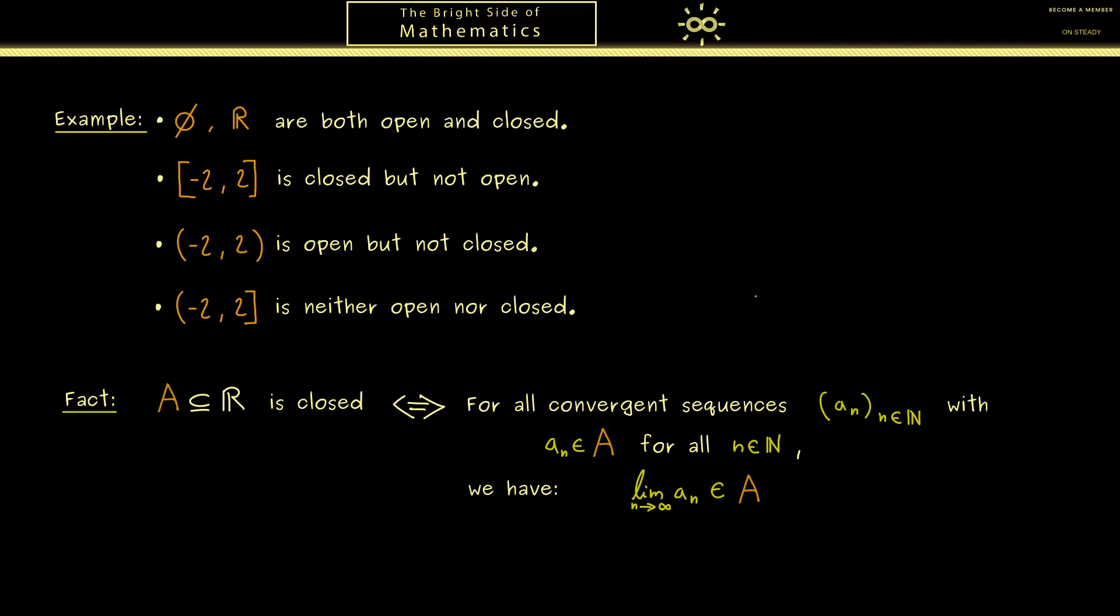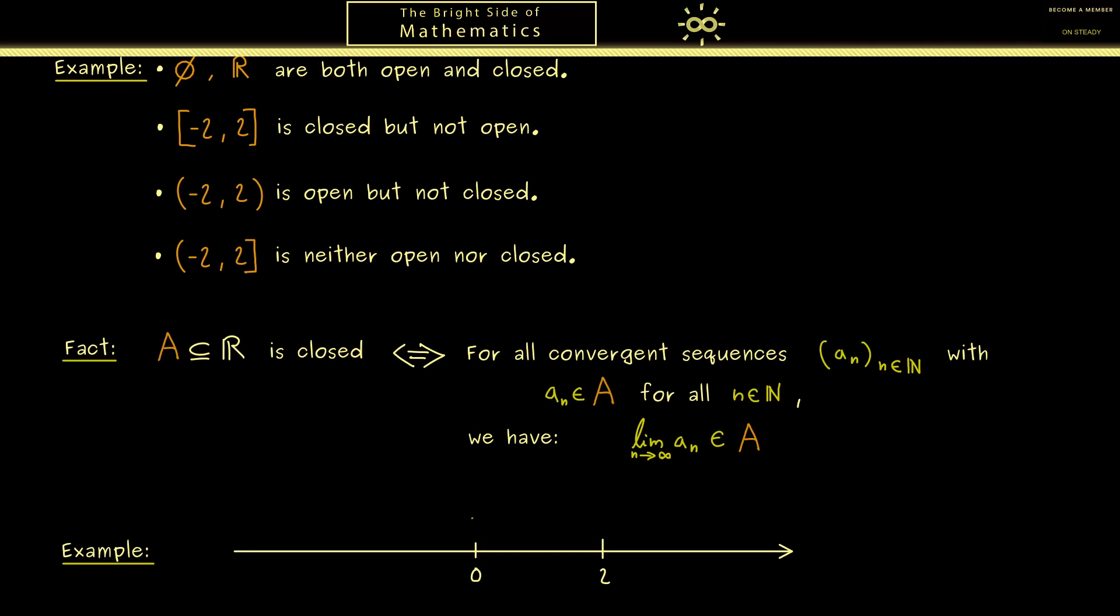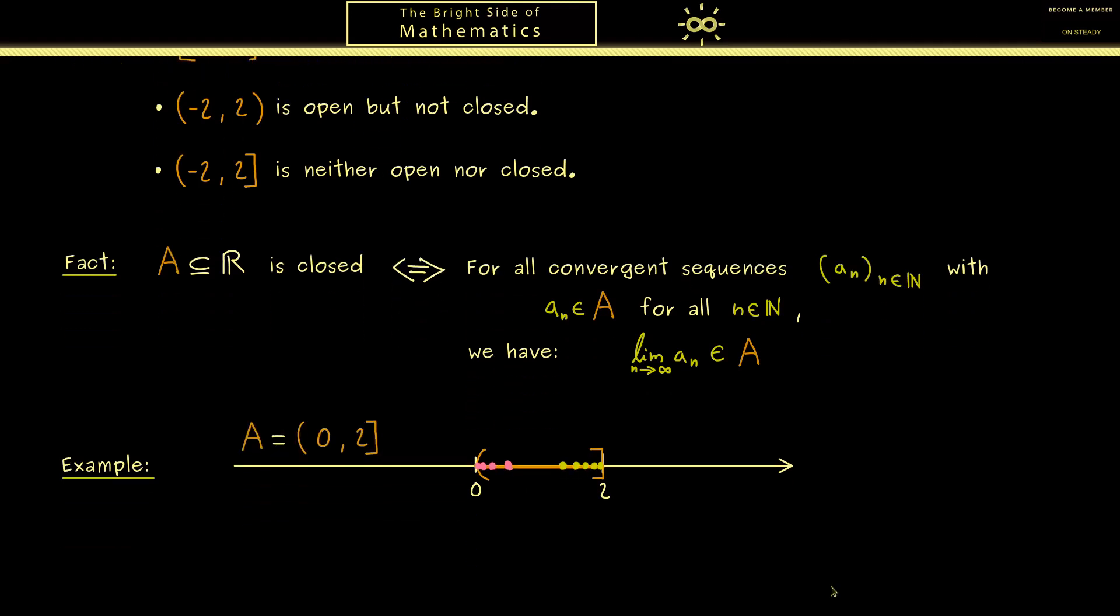Also here it might be helpful to look at an example. Here on the number line let's take the interval that starts with 0 and ends with 2. Here the number 2 lies inside the interval but 0 does not. Hence we are not able to leave the interval from the inside to the right. For example we could take such a sequence which is convergent but then it would have the limit 2. It's not possible to get the limit outside. However on the left hand side it's indeed possible. For example we could take the sequence 1 over n. It's a convergent sequence where all the sequence members lie inside A. However the limit here is 0 which is not an element of A. Hence the conclusion is this set is not closed.